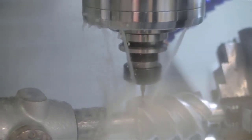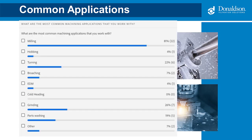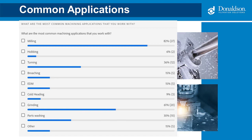Wet machining brings oil or cutting fluid into the process for chip clearing, lubrication, and cooling — that's what you're seeing in the video here. Wet machining represents about 80% of the total market. The most common wet machining applications include milling, hobbing, turning, broaching, electrical discharge machining, cold heading, polishing, and parts washing. We're going to post a poll — please take a moment to respond, and you can select more than one. Looks like we have a lot in milling and quite a bit in grinding — a wide range.